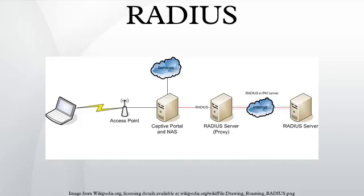The remote access server, the virtual private network server, the network switch with port-based authentication, and the network access server are all gateways that control access to the network, and all have a RADIUS client component that communicates with the RADIUS server. RADIUS is often the back-end of choice for 802.1x authentication as well. The RADIUS server is usually a background process running on a Unix or Microsoft Windows Server.